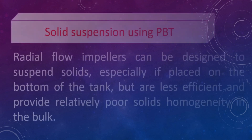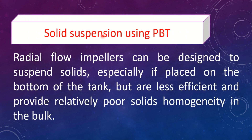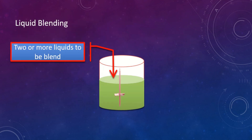The next application is solid suspension using PBT. Radial flow impellers can be designed to suspend solids, especially if placed on the bottom of the tank, but are less efficient and provide relatively poor solid homogeneity in the bulk. The next application is liquid blending — two or more liquids that need to be blended can use the pitched blade turbine successfully.